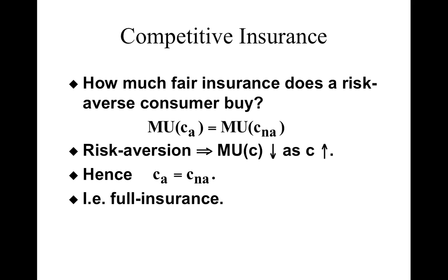This implies that the consumer would fully insure. A risk-averse consumer in a competitive insurance industry will fully insure, so that consumption in the accident state equals consumption in the non-accident state. To sum up: if the consumer is a risk-averse expected utility maximizer and is offered fair insurance against the loss, he will optimally choose to fully insure — 'optimally' because he is satisfying the optimization condition.